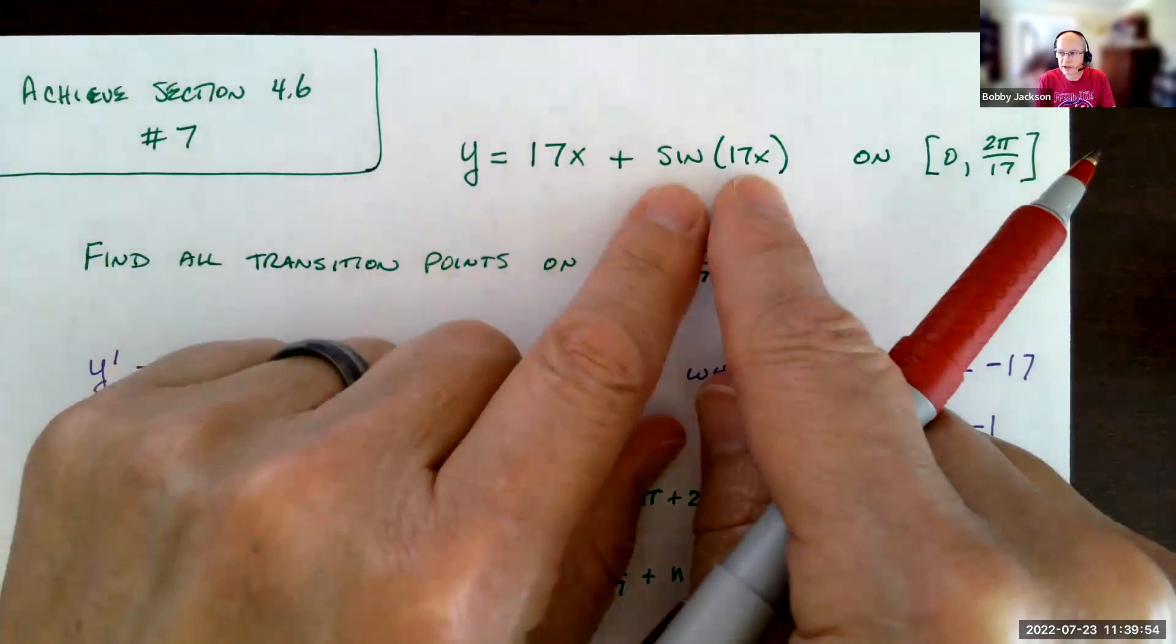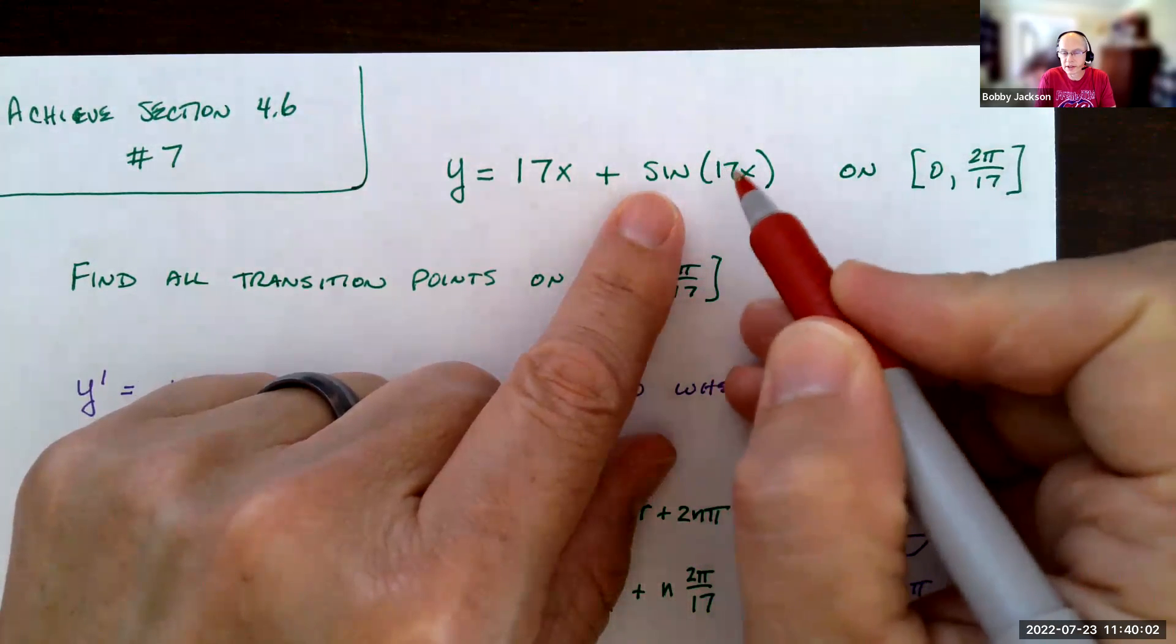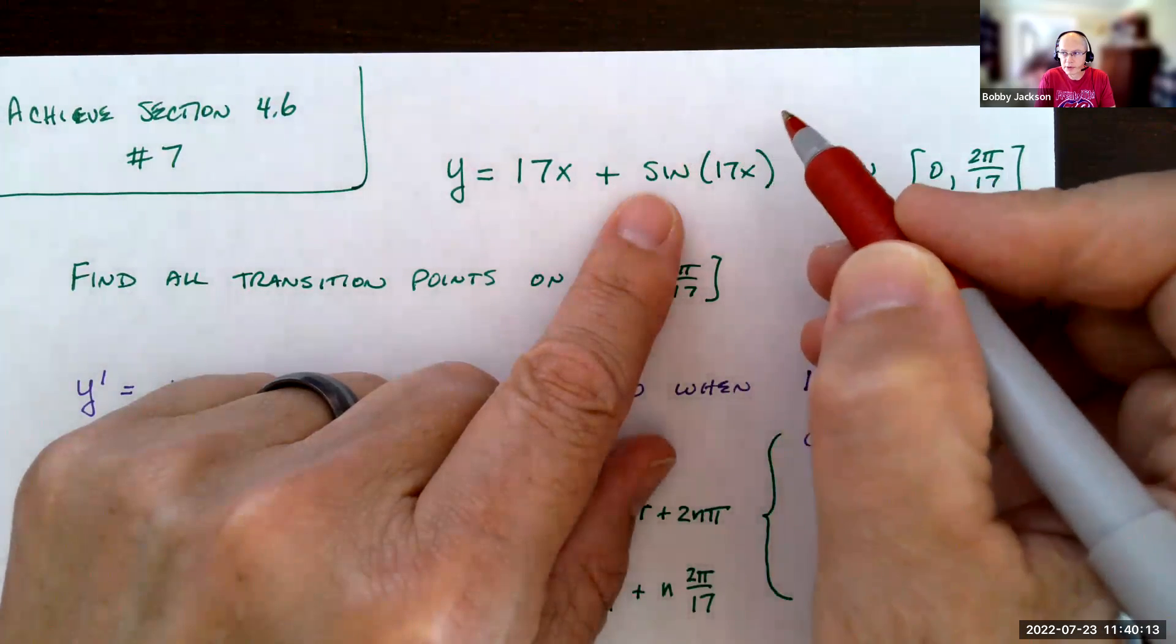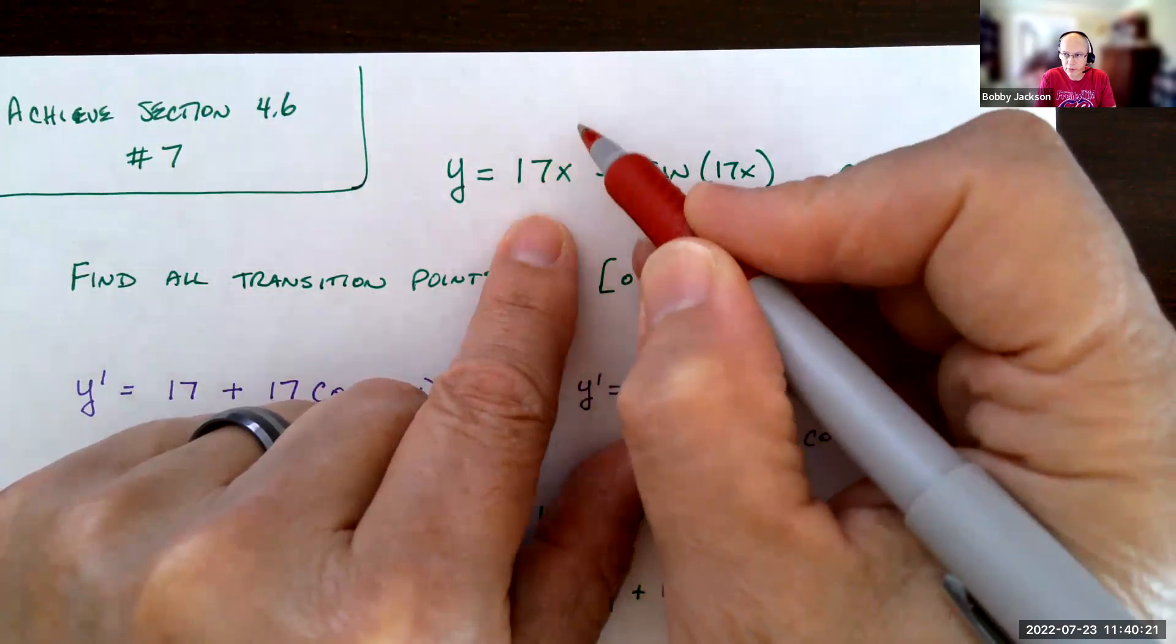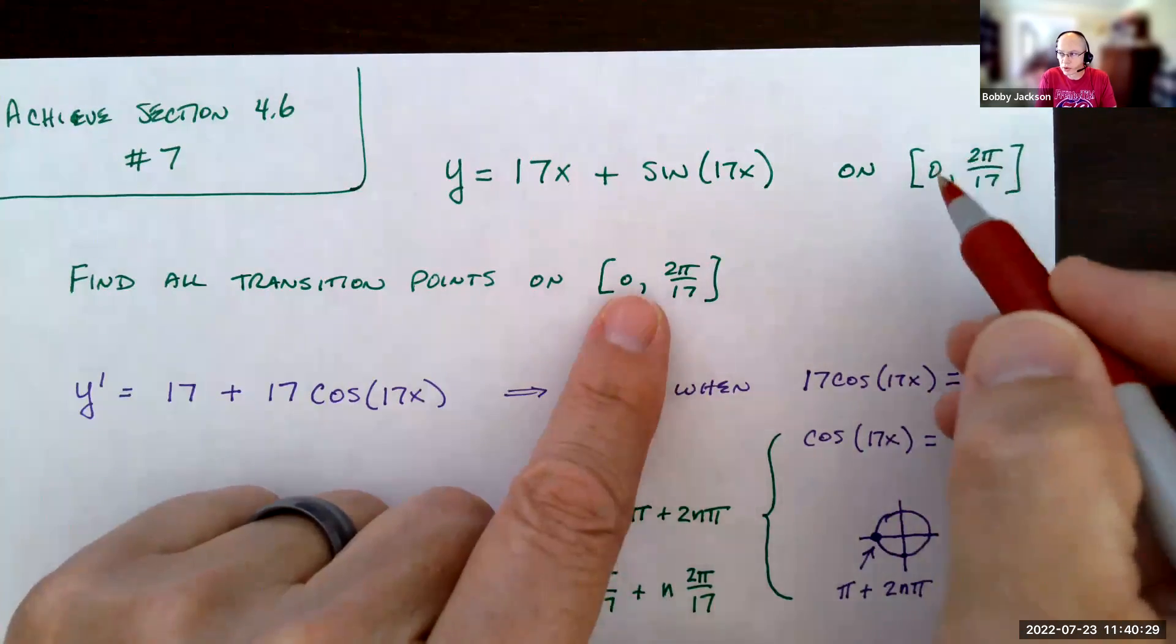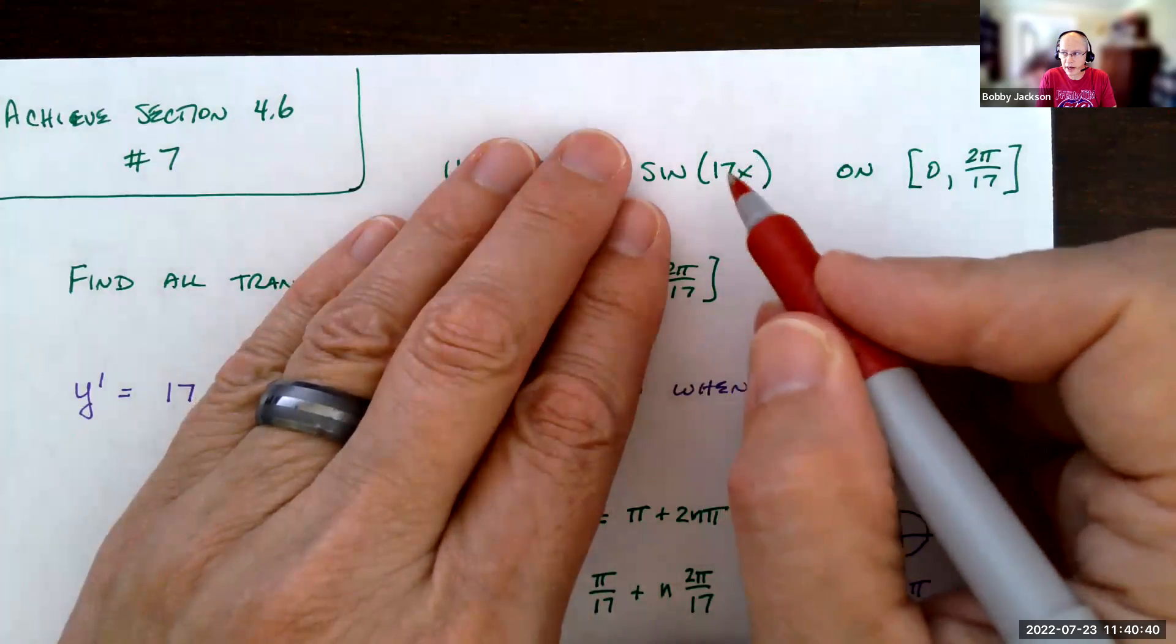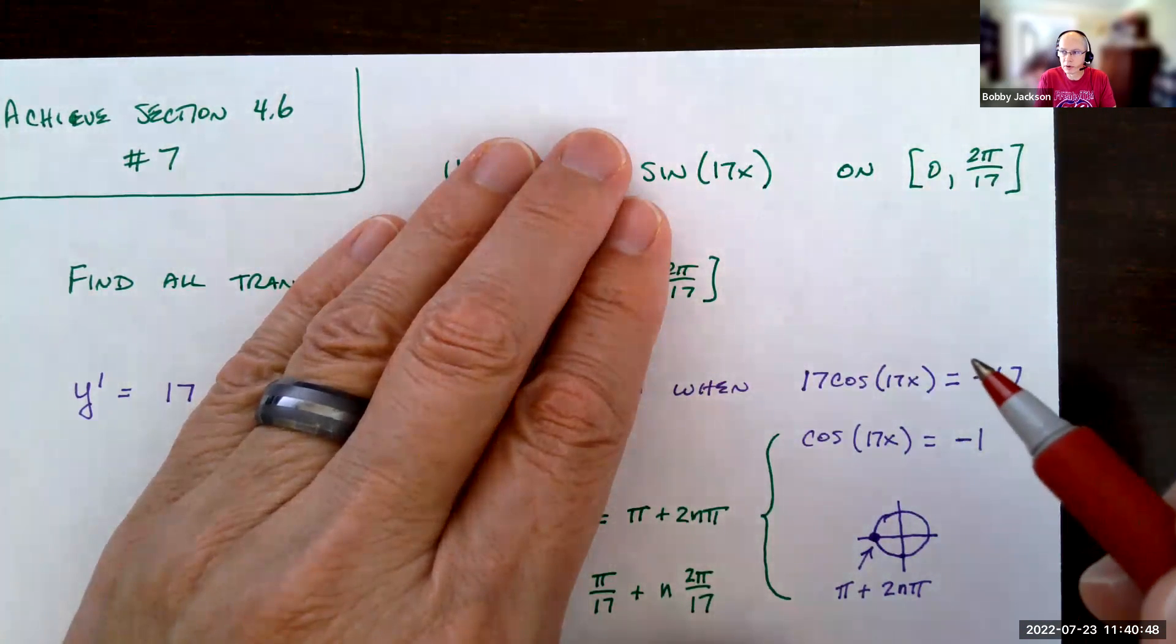When you take the sine of 17x, if you remember from your trigonometry, this number 17 affects the period or the frequency of the graph. And so this number 17 actually makes there be a lot more ups and downs. You've got 17x, which is a linear function, so you're going up with a slope of 17, and then the sine function is bouncing back and forth very rapidly along that steep line. But we're just on this short, small interval, 0 to about 0.37. You can tell that the period of this would be 2π divided by 17, so this is exactly one period for this sine function. That's probably why they have it on that interval.